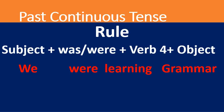The rule of past continuous tense is: subject + was/were (depending on the subject) + verb in the fourth form (present participle) + object. If the subject is singular, we use 'was'; if the subject is plural, we use 'were.' Examples: 'We were learning grammar.' 'Sheila was learning grammar.' 'Ramu was learning grammar.' 'Ramu and Krishna were learning grammar.'